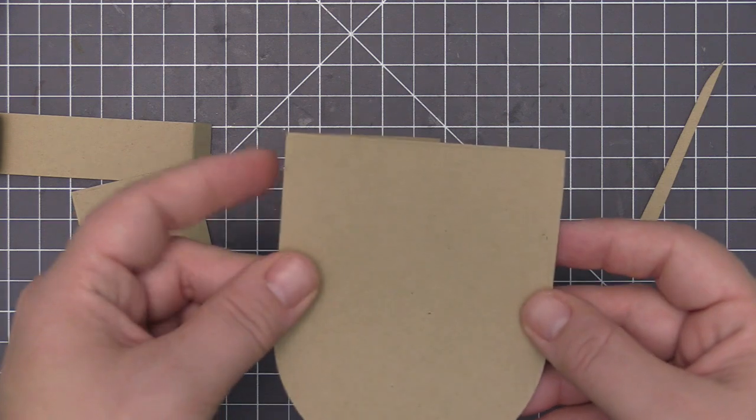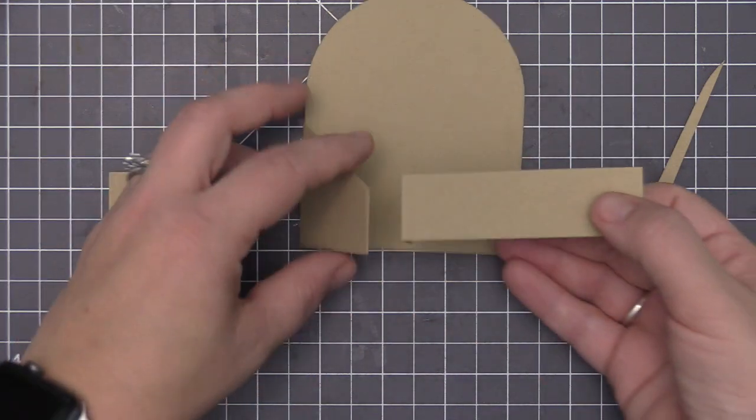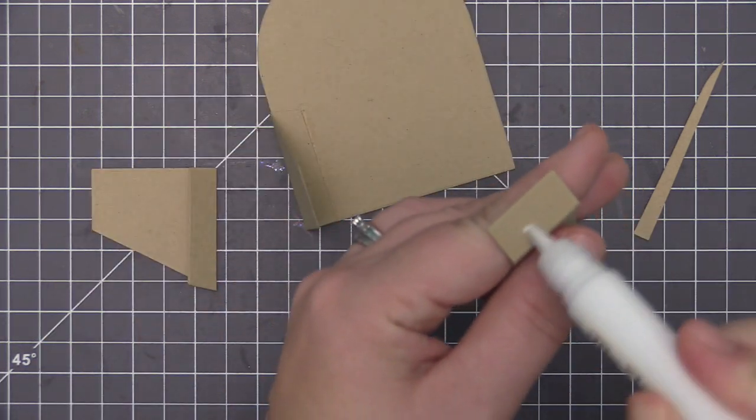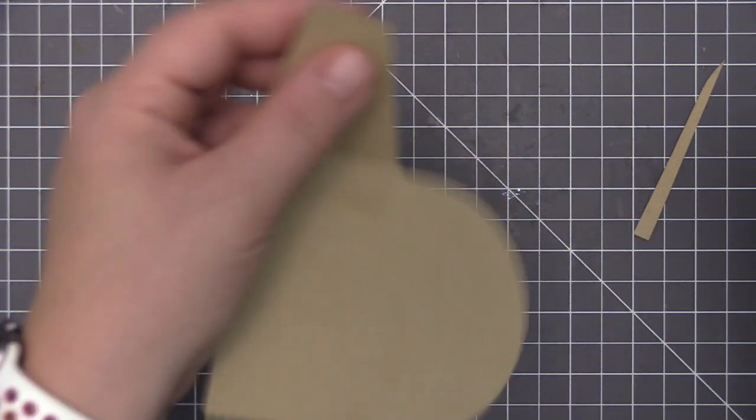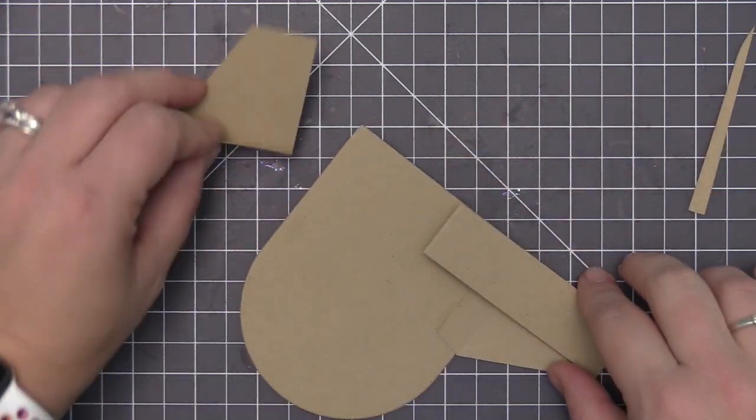I can move the pieces around to get them exactly where I need them before making sure they're adhered down. You can see when I adhere this on, you can see that die piece on the front of the card panel. I'm not worried about that because we're going to cover the inside of that piece there with another piece of cardstock. I like to have the really smooth outside on the back.